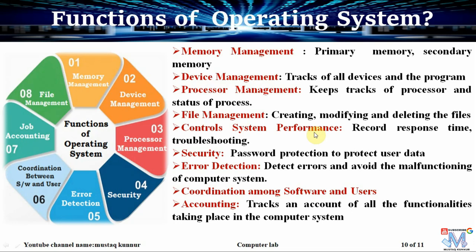Control system performance is a function where the OS records the response time and is used to troubleshoot applications. As far as security is concerned, in order to protect our computer or any application, password protection is required and that is provided by the operating system. In order to detect errors and troubleshoot them in applications or hardware, the error detection facility is provided by the operating system. For building coordination between the application programs and the user, we need an operating system. Finally, for accounting — to keep track of all the functionalities of the computer system — the accounting functionality is provided by the operating system.